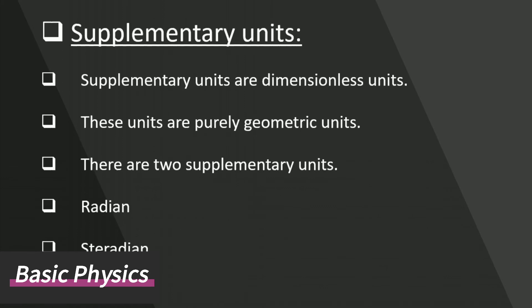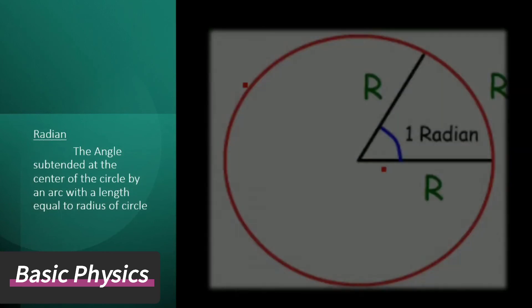One is radian. The angle subtended at the center of the circle by an arc with a length equal to radius of circle. Or, when the arc length becomes equal to radius of circle, then the angle will be 1 radian.